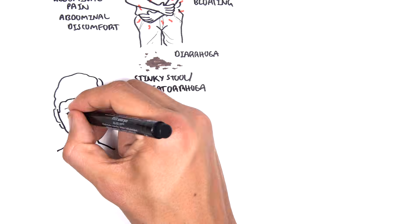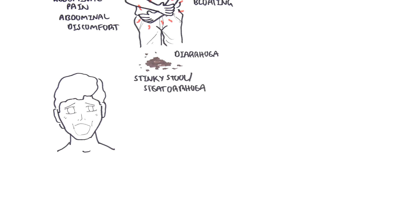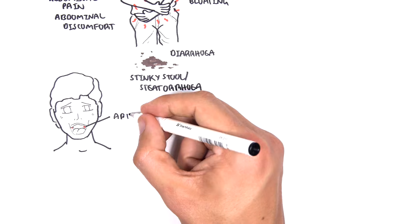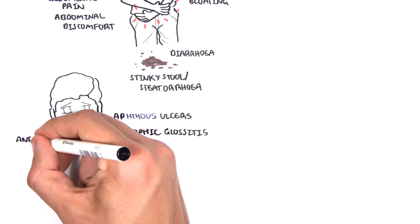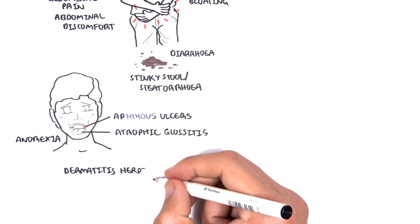Some signs of celiac disease around the face include development of aphthous ulcers, atrophic glossitis from the anemia, as well as anorexia from the malabsorption.